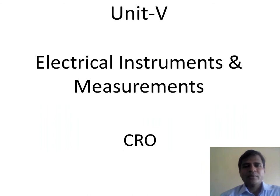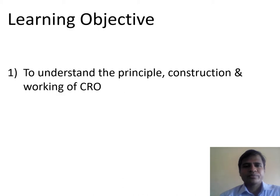48th session, Unit 5: Electrical Instruments and Measurements. In this session, we will be studying the cathode ray oscilloscope. The learning objective of the 48th session is to understand the principle, construction, and working of the cathode ray oscilloscope.